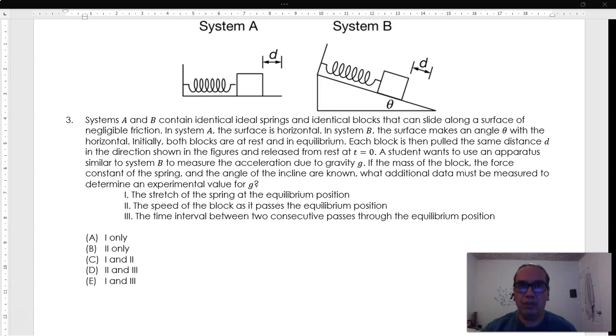Initially, both blocks are at rest and in equilibrium. Each block is then pulled the same distance d in the direction shown in the figures and released from rest at t equals 0.